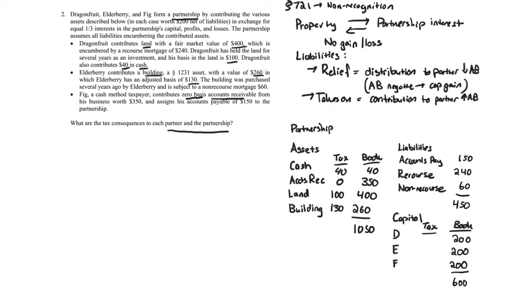For the tax column of the capital account, we need to analyze each partner individually. There's no gain or loss recognized on the contribution of property, but the liabilities can create capital gain through liability relief. The liabilities have no effect on the partnership itself — they affect only the partners. The best approach whenever liability relief is involved is to create a table.